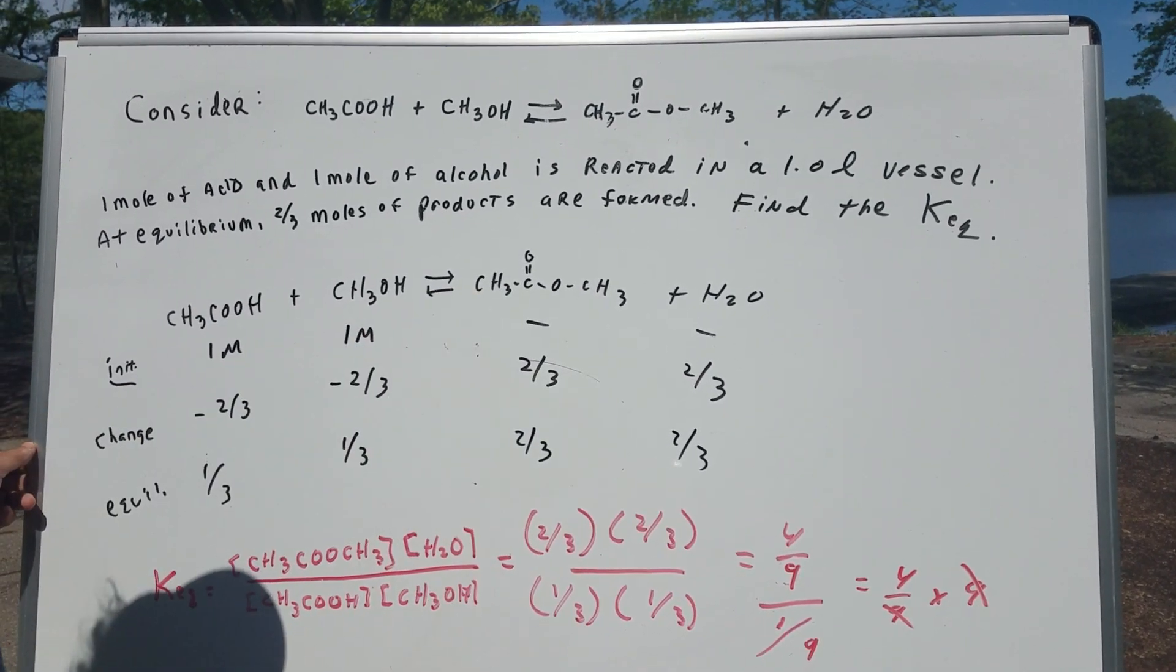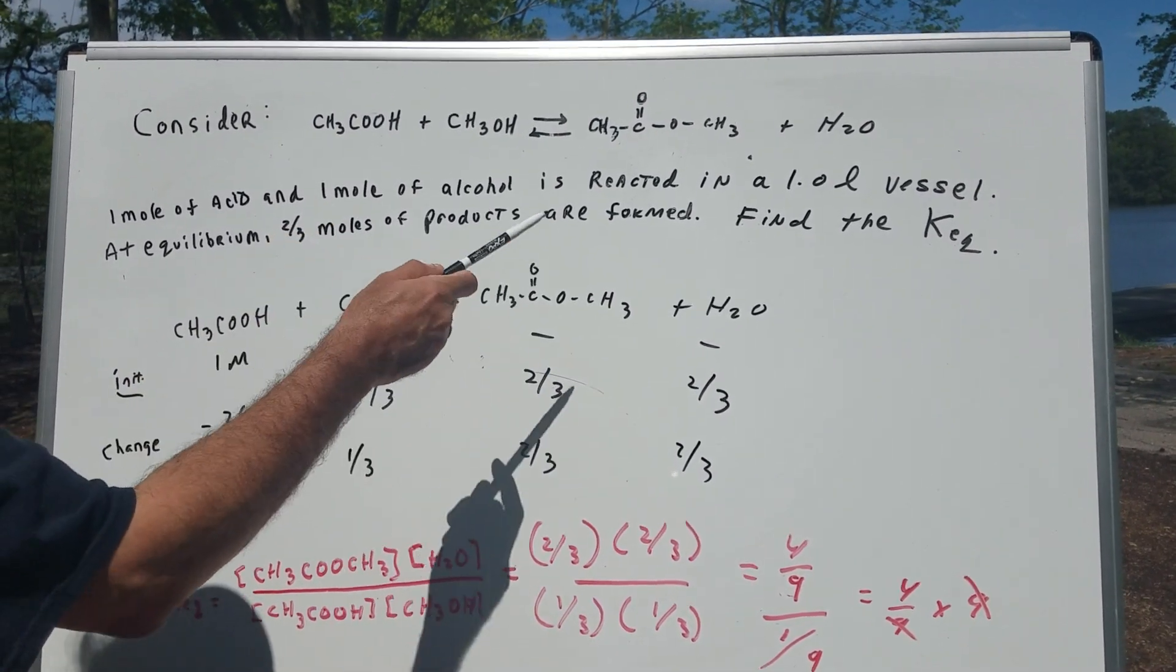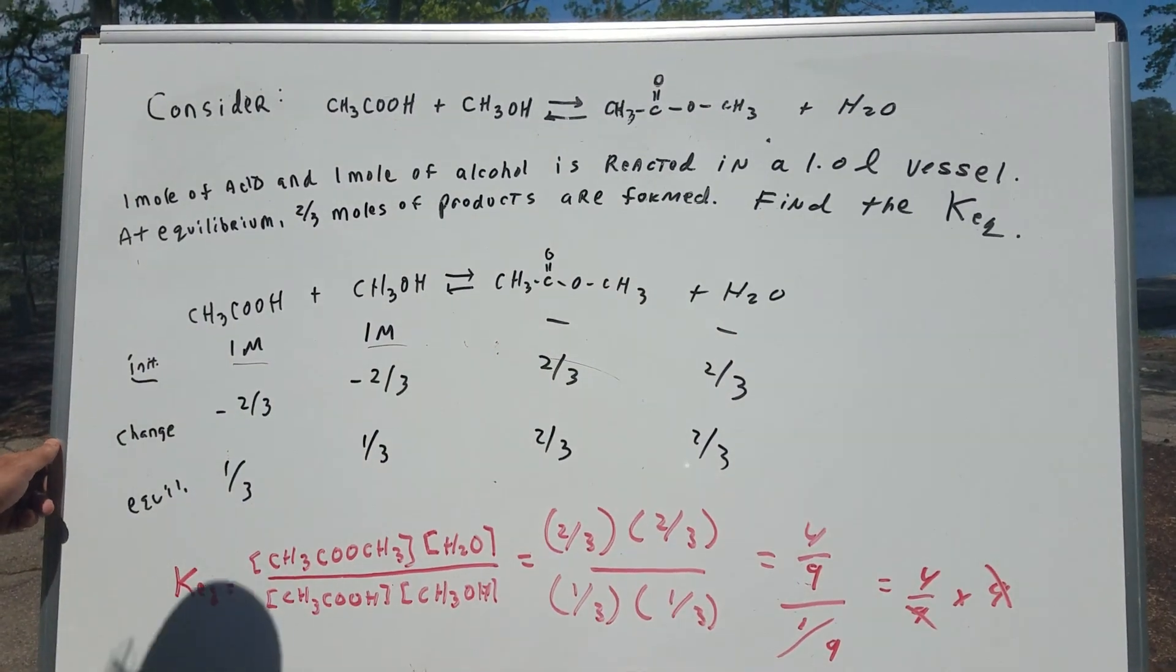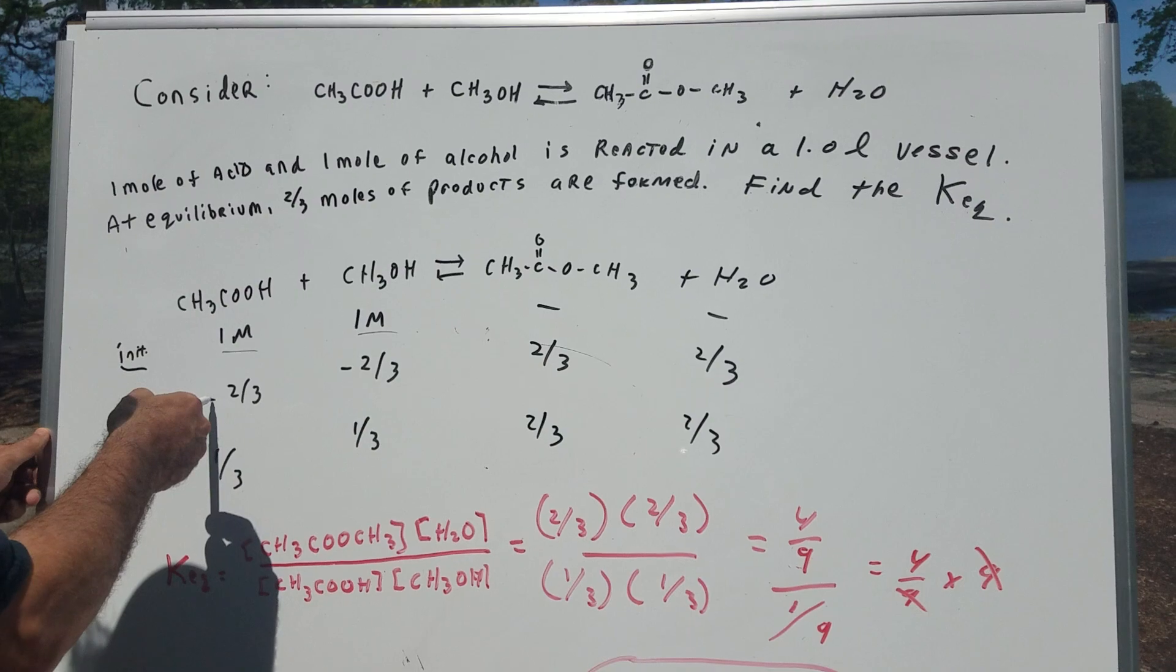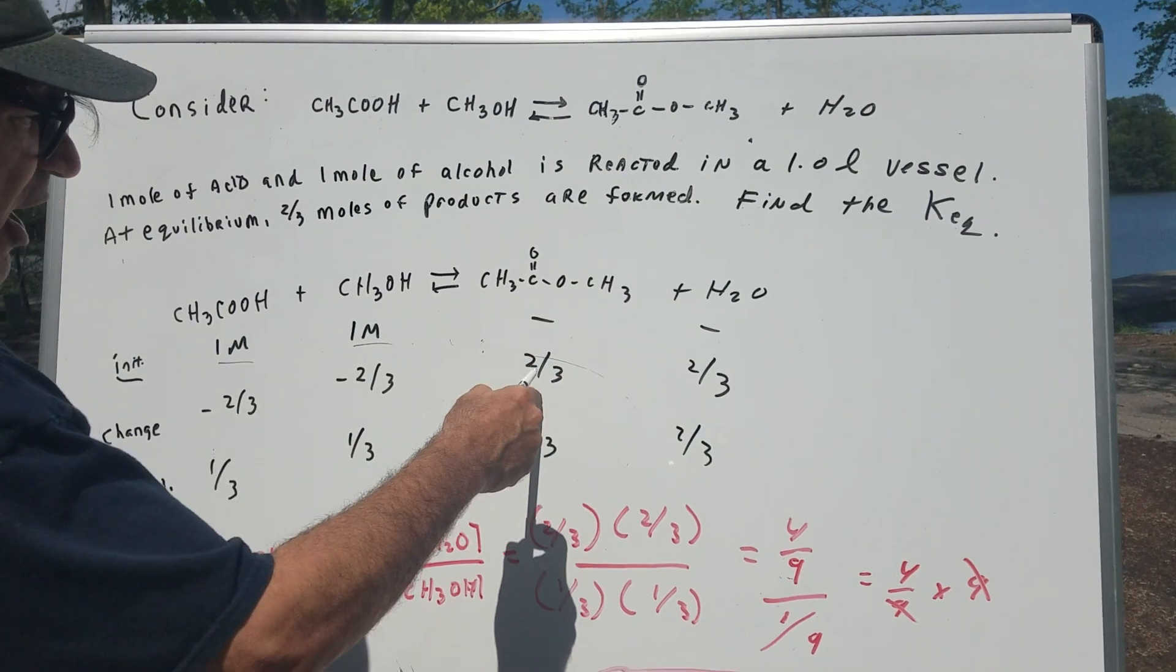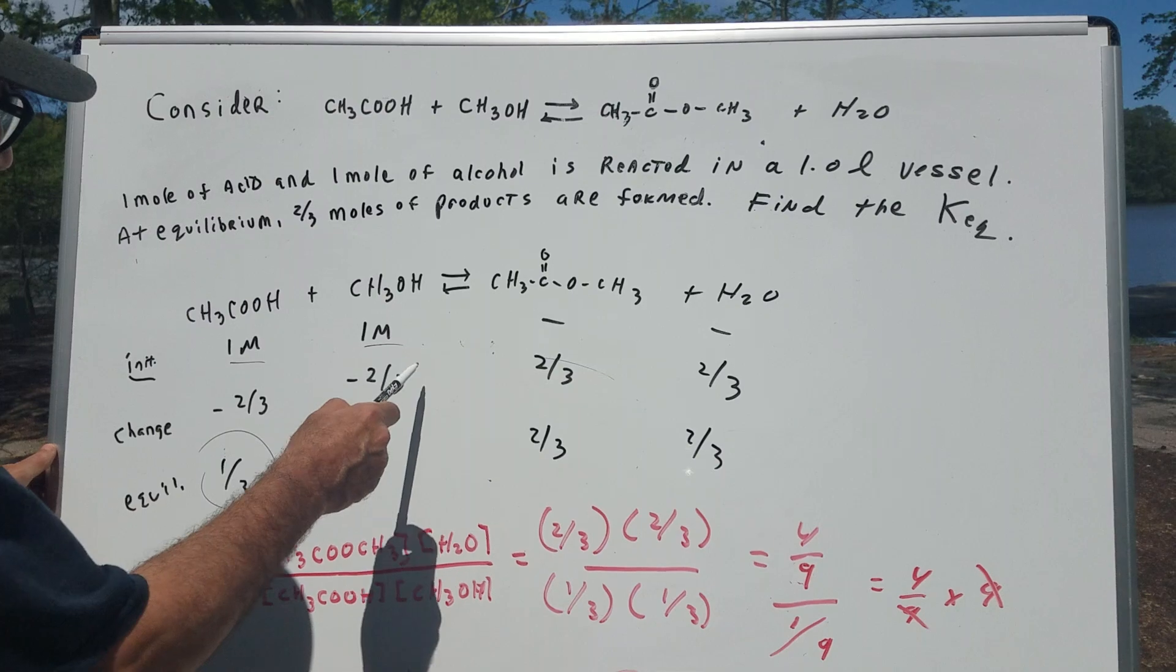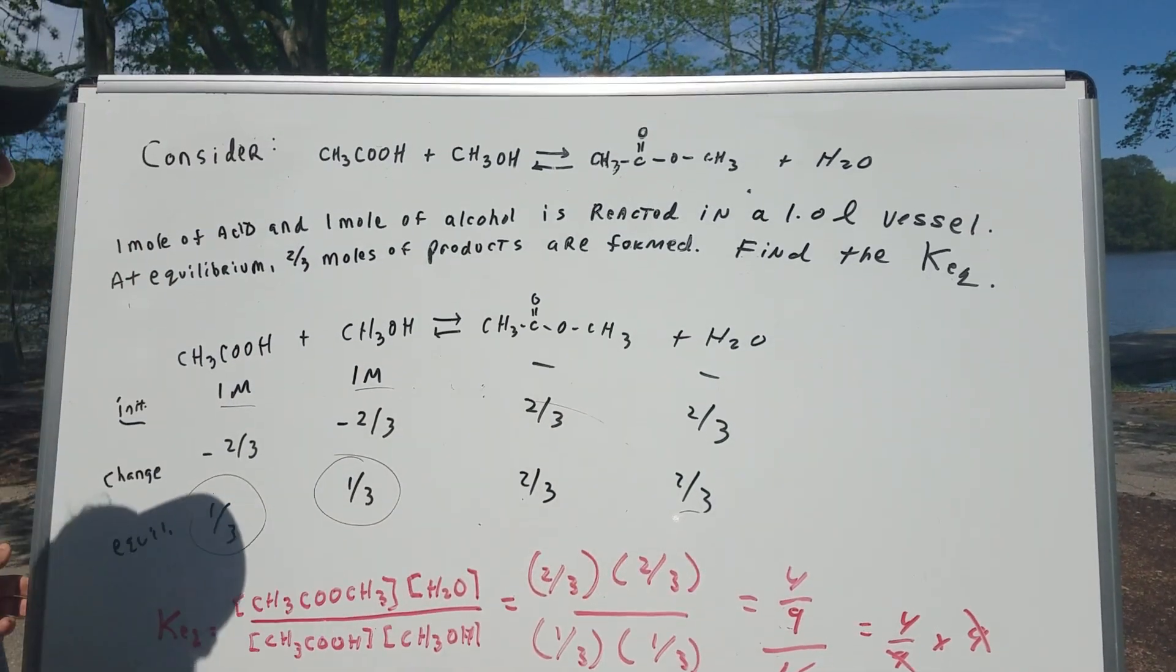Well, I write the reaction again. We set up the ice table as usual. Now, whenever you do initial, you always want to make sure you're in moles per liter. So one mole and one liter gives me one molar here, one molar here. There's no ester and there's no water to start. The change, since we're forming two-thirds molars of products, they're going to come from here. So we subtract two-thirds from here, two-thirds molar from here. So since this is a one-to-one ratio, this is two-thirds and this is two-thirds. Then at equilibrium, we have one minus two-thirds. What's the final tally? We have one-third of acid, one minus two-thirds. We have one-third of the alcohol. Then we have two-thirds of the ester and two-thirds of the water.